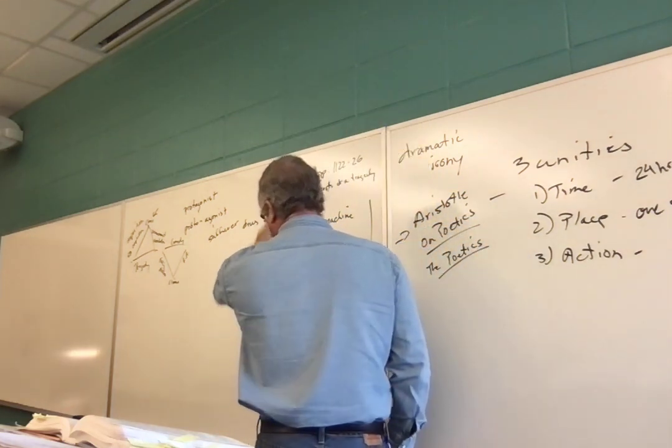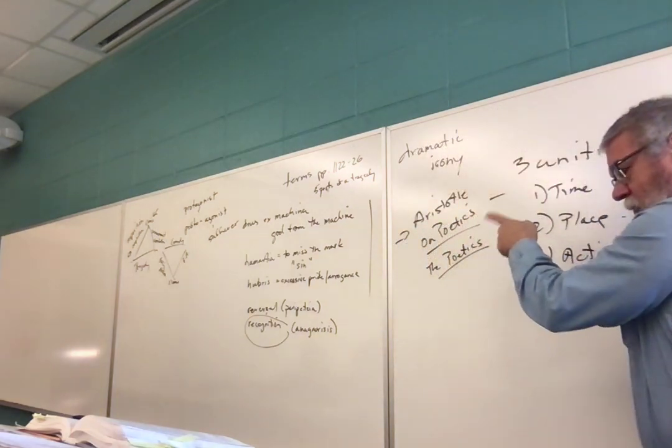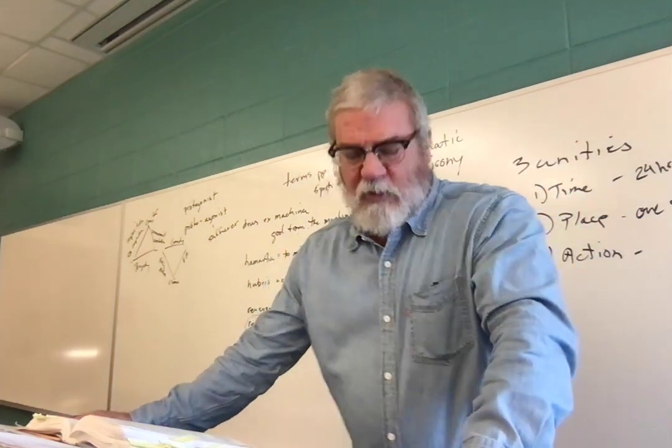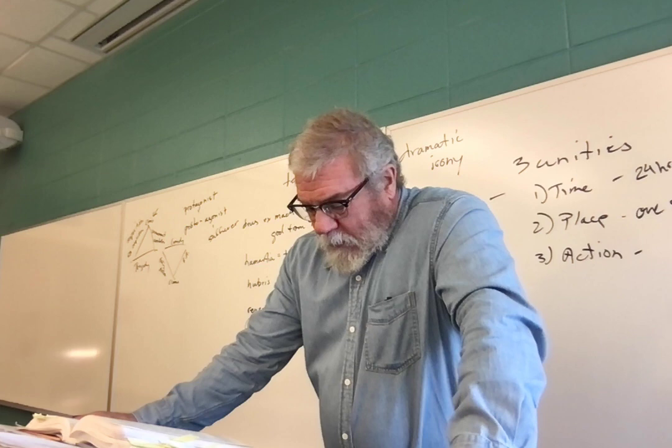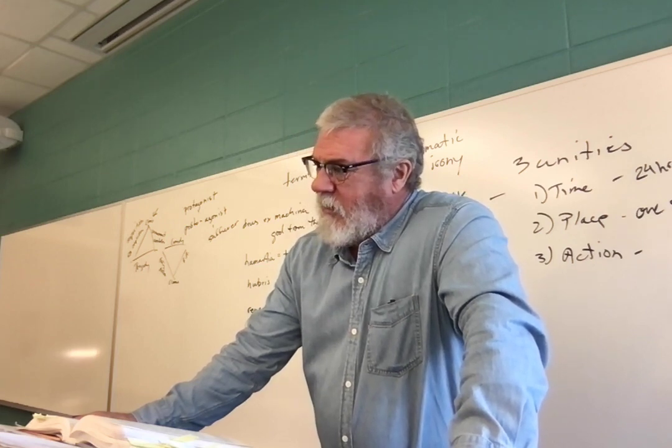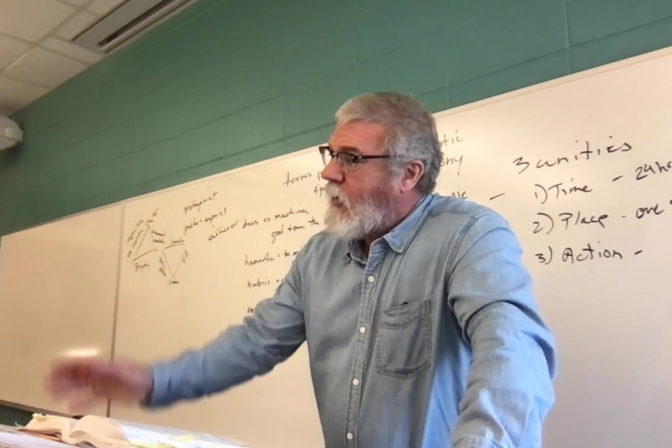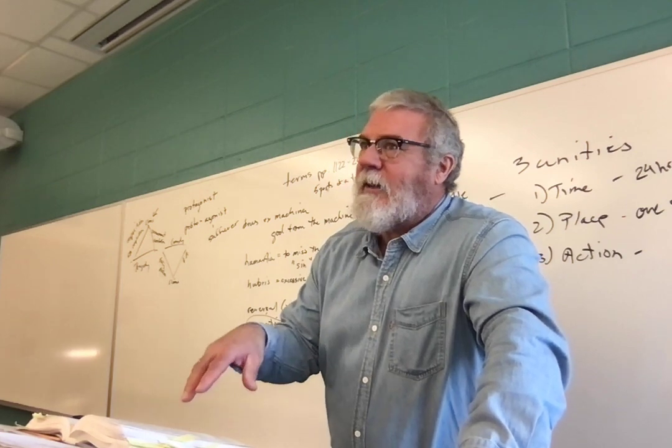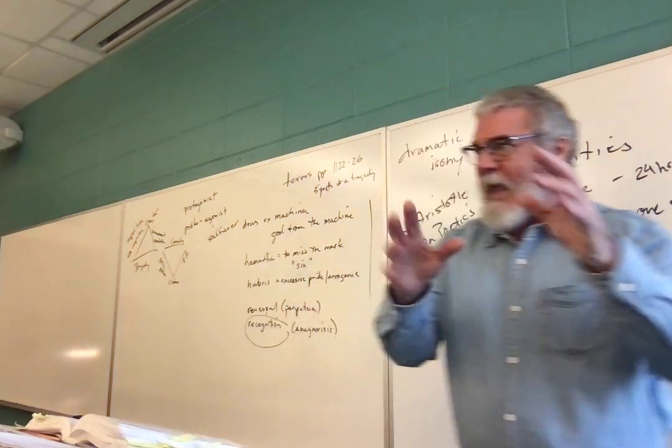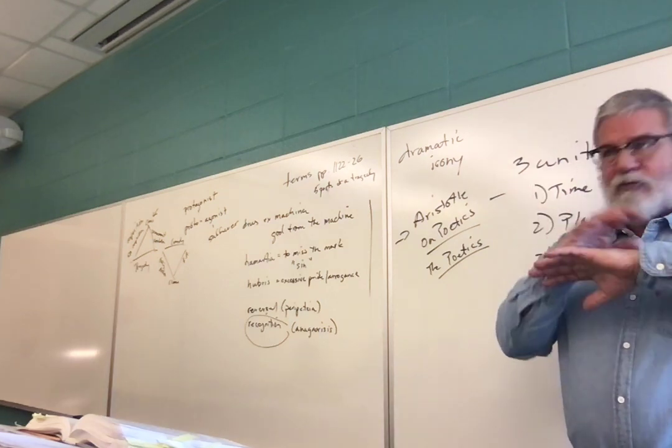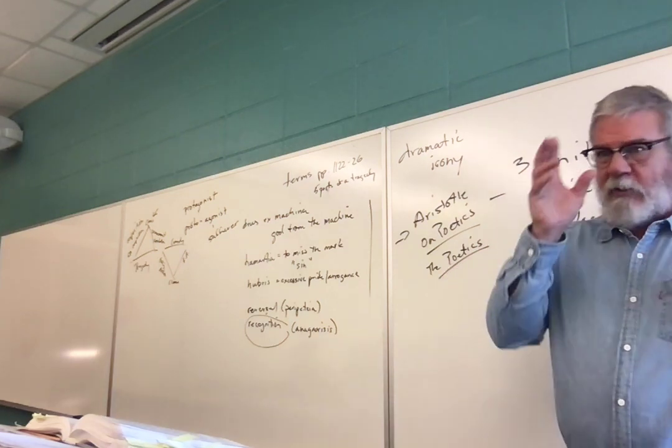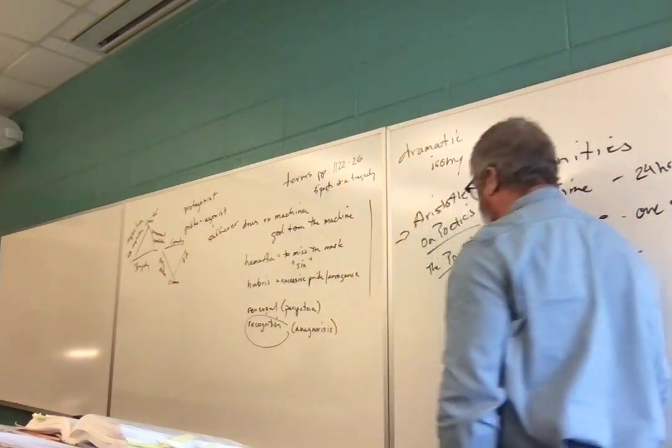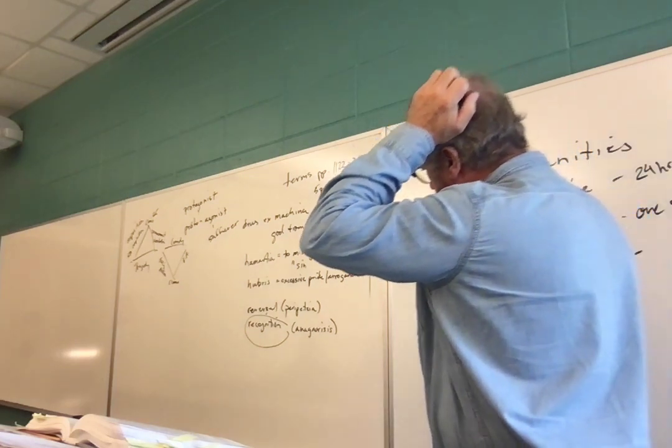So let me start with these terms. All of this information comes from Aristotle. He wrote a book called On Poetics, or The Poetics, depending upon the translation you use. And he bases most of what he says there about tragedy at least on Oedipus the King.